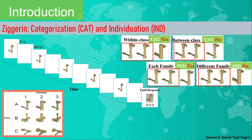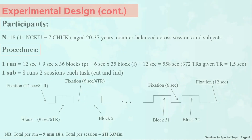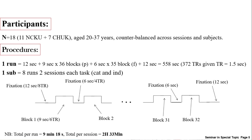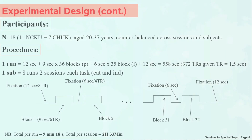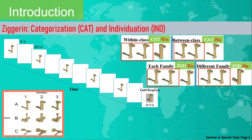That is individuation. We designed the subject to perform this kind of task in a counterbalanced order. Even-numbered subjects will start with individuation for the first run. Subjects will respond: yes categorization, no categorization, yes individuation, or no individuation. That is the task.